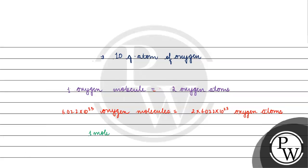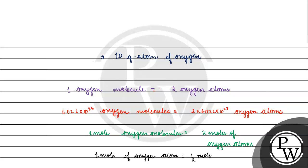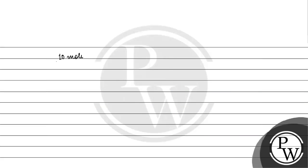Therefore, 1 mole of oxygen molecules presents 2 moles of oxygen atoms. Conversely, 1 mole of oxygen atoms will be present in 1/2 mole of oxygen molecules. So 10 moles of oxygen atoms will be present in 1/2 × 10 = 5 moles of oxygen molecules.